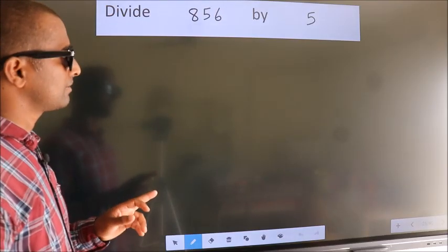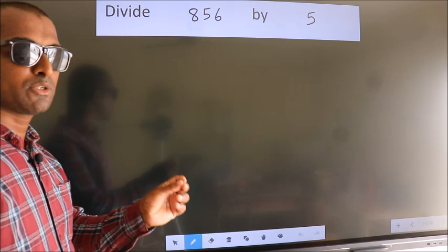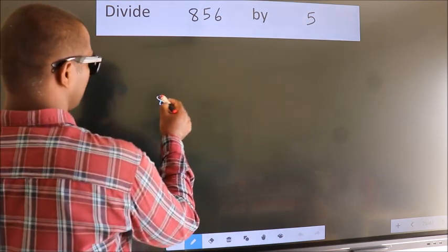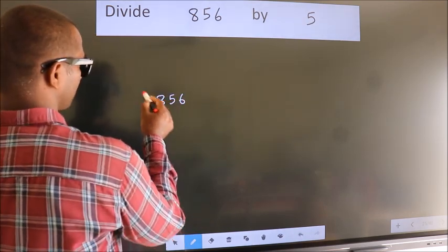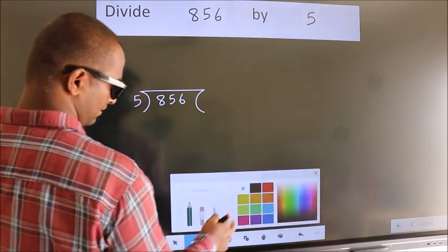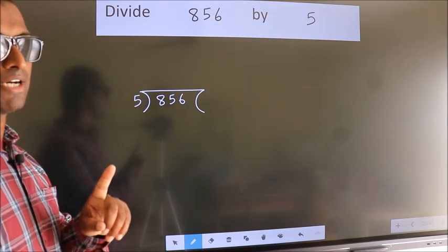Divide 856 by 5. To do this division, we should frame it in this way. 856 here, 5 here. This is your step 1.